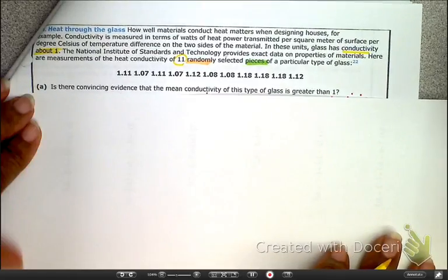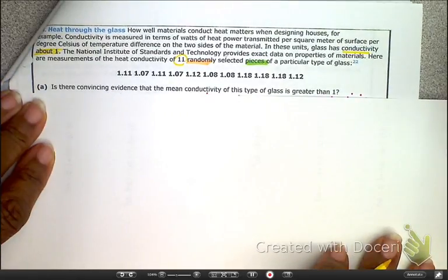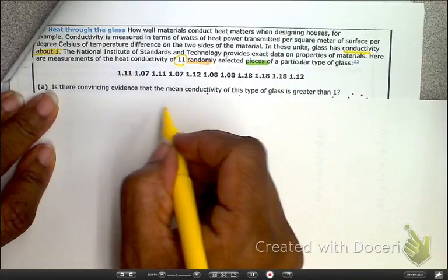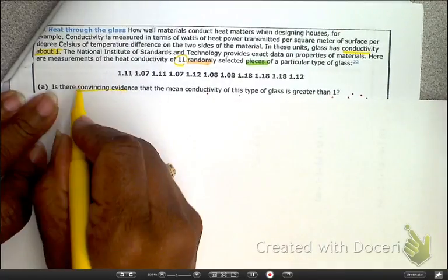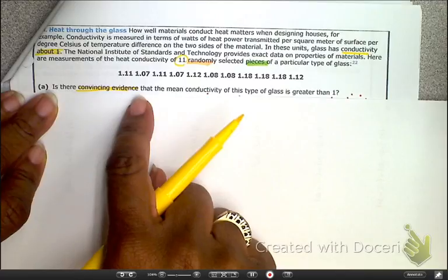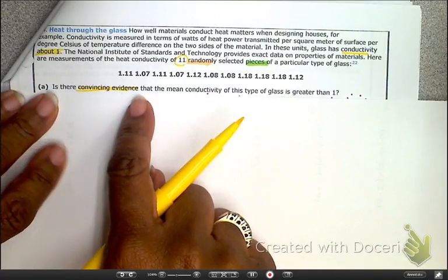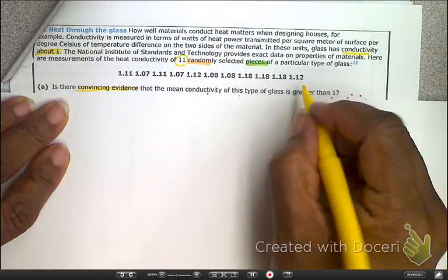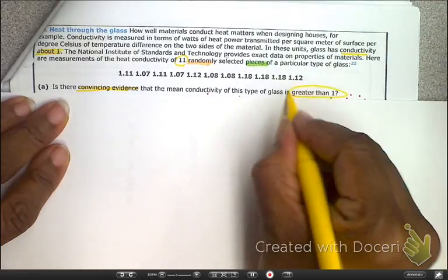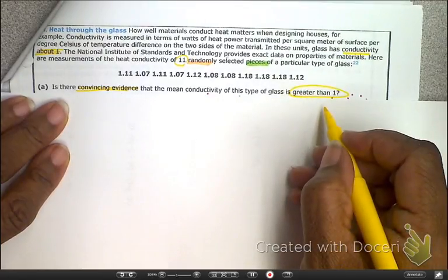As we're starting this test, we're asking, how do we know? Because they say, is there convincing evidence? This right here, remember, tells you that you're going to be doing a hypothesis test. And then it tells you right here what the HA is, that it's going to be greater than 1.